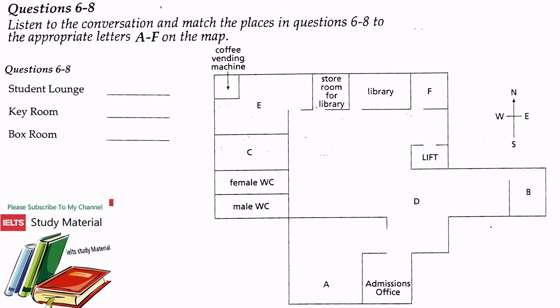My luggage was sent on ahead. Do you know where I should collect it? The box room is next to the women's toilet. You'll have to get the key from the key room. Thank you. That is the end of section one. You will now have some time to check your answers.